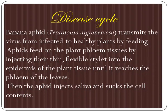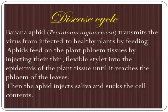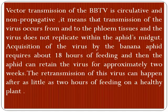One of the important vectors playing a major role in spreading bunchy top of banana is the banana aphid Pentalonia nigronervosa. It transmits the virus from infected to healthy plants by feeding on the plant's phloem tissue, injecting their thin flexible stylet into the epidermis of the plant tissue until it reaches the phloem of the leaf.